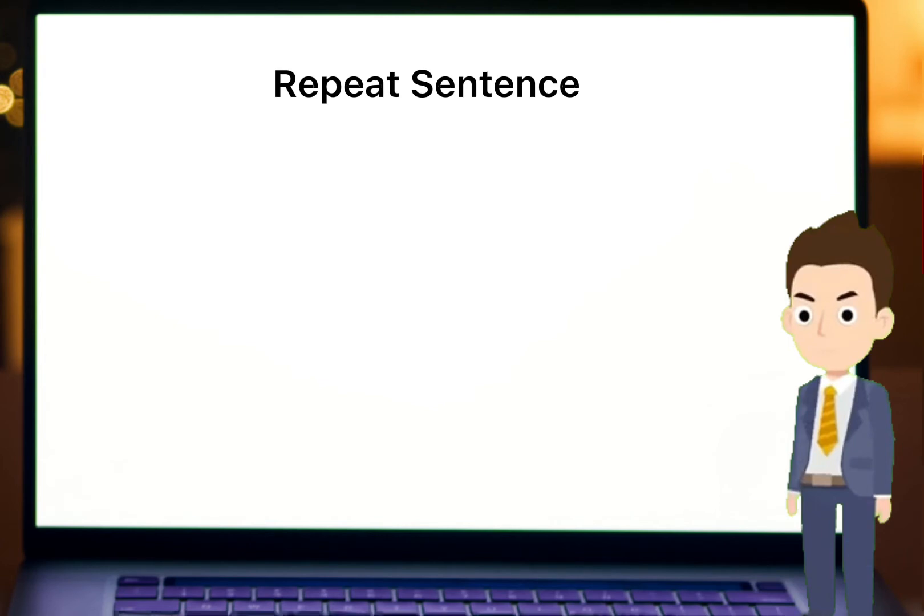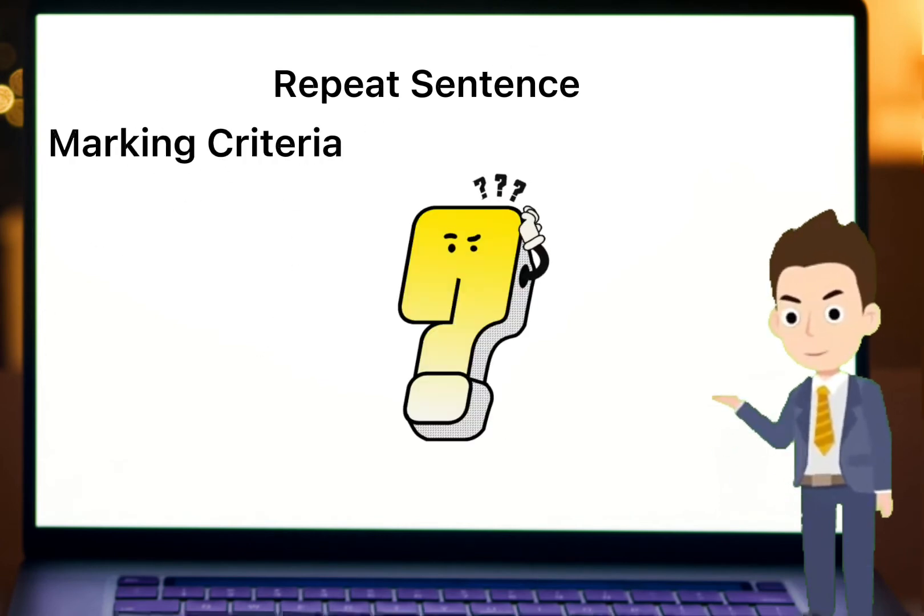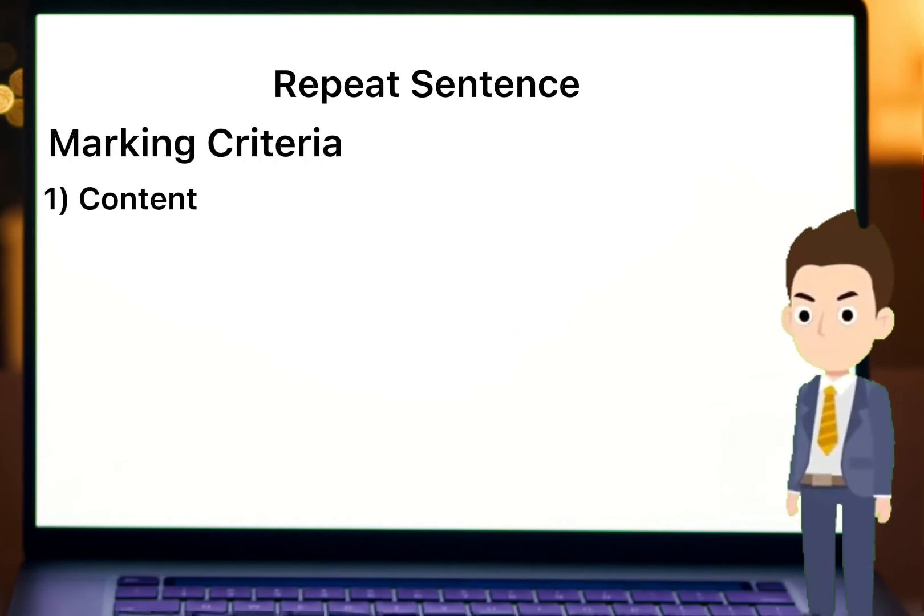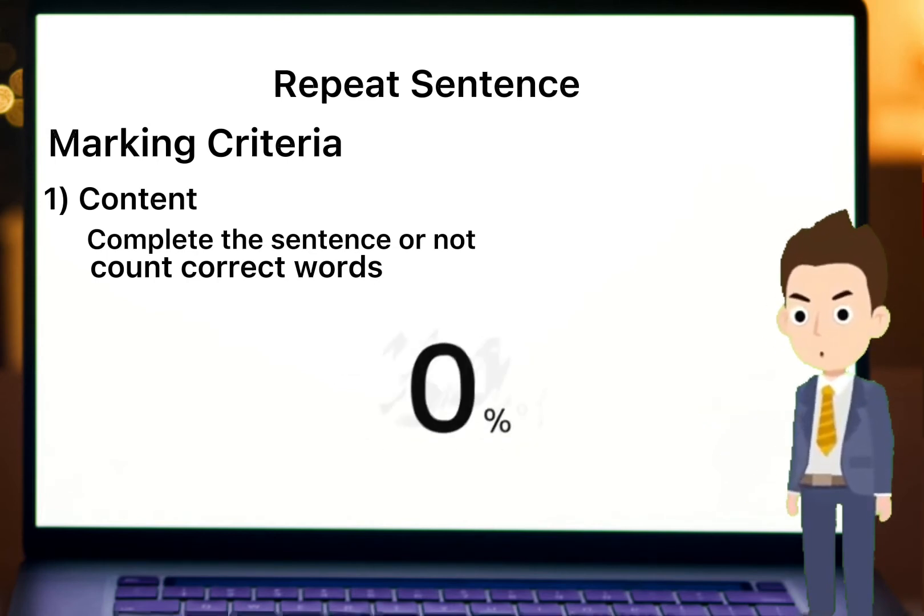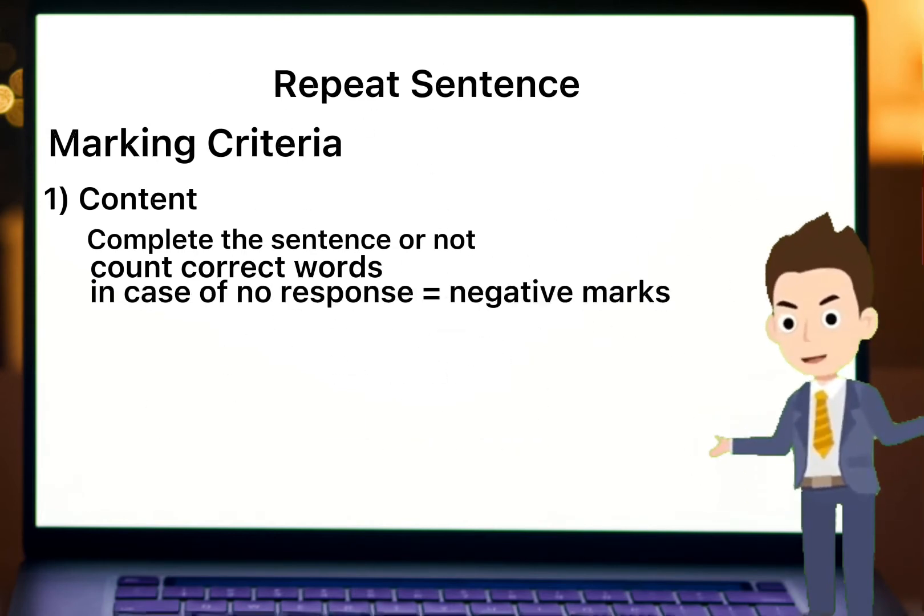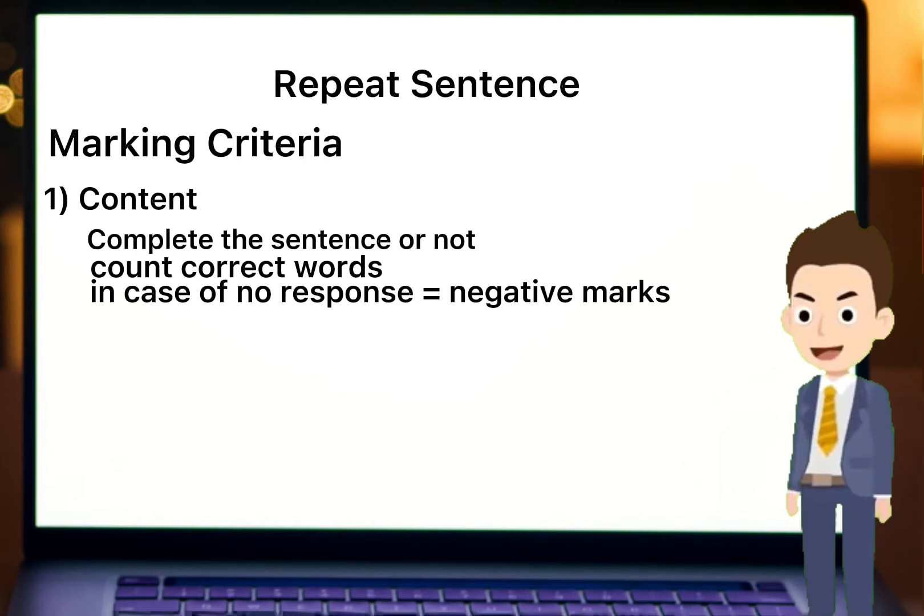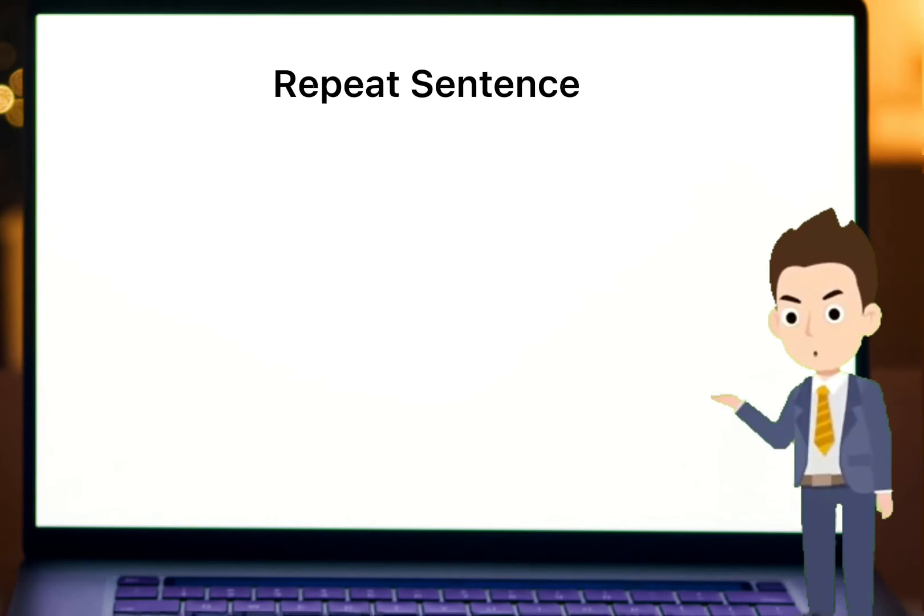PTE ka marking criteria: Pehle number pe content hai. PTE check karta hai ke sentence pura suna hai. Agar sab kuch sahi hai, PTE correct words count karega. Jo response denge usko evaluate karega. PTE mein negative marking nahi hai.